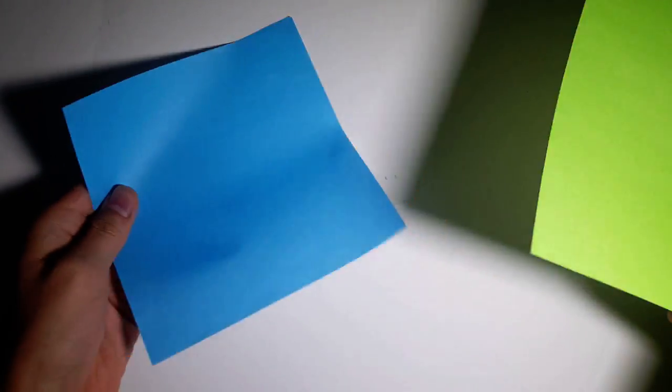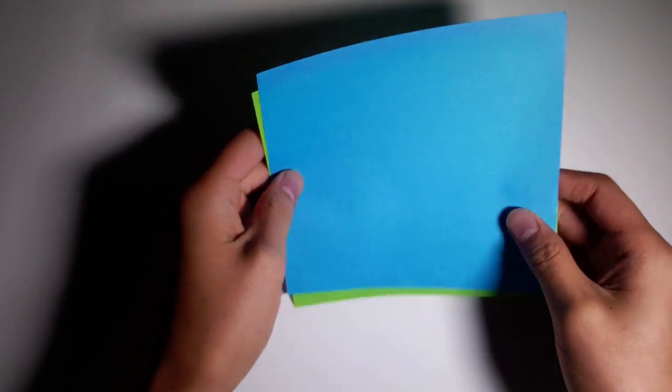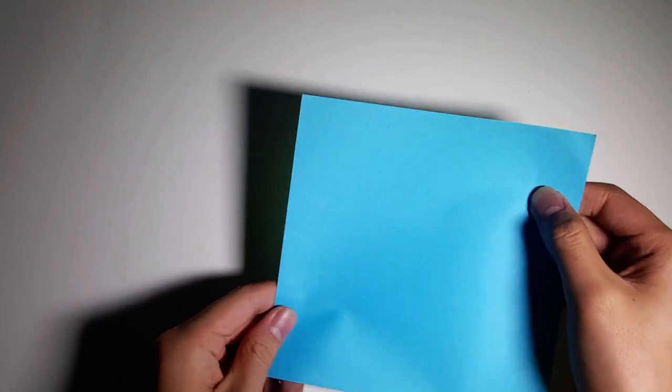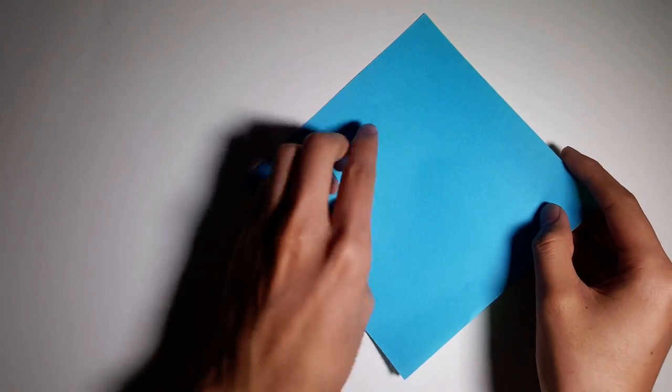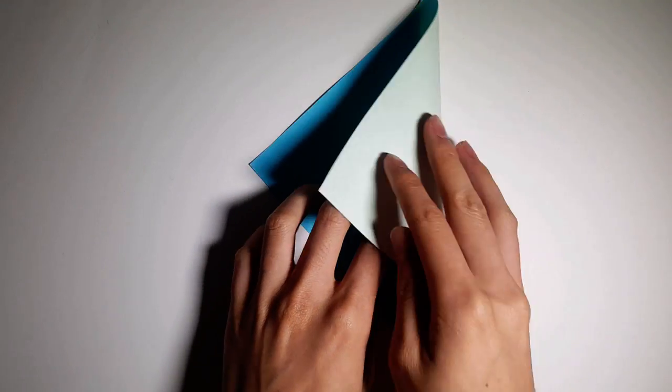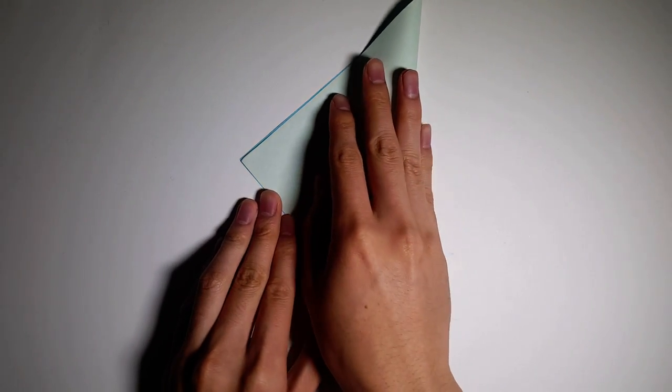Now we're just gonna pick which color we want more dominant, so put that color to the front, and we're just gonna put it over each other and fold it vertically in half.